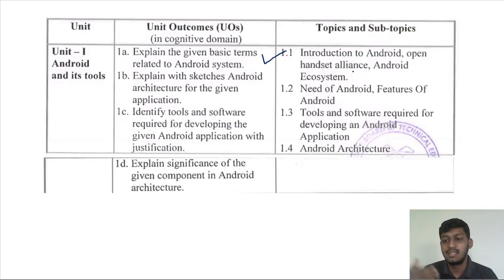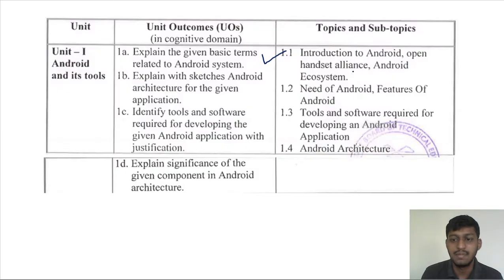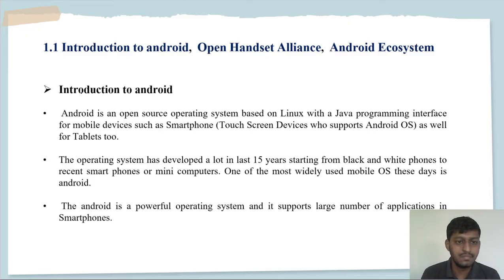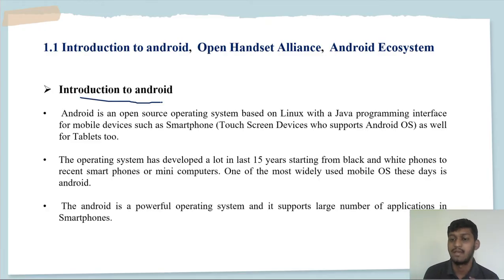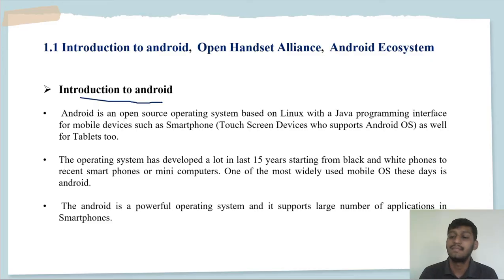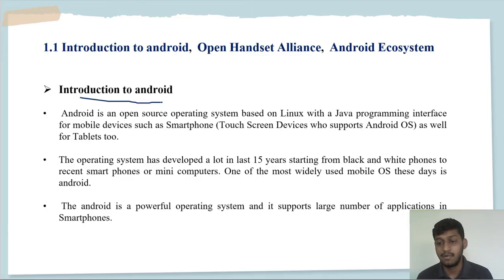Let's get started with point 1.1 — Introduction to Android. The basic question is: what is Android? How do we differentiate an Android phone from an iPhone? We judge by operating systems. An operating system is an interface between a user and hardware. Think about your laptop — what operating system does your laptop use?